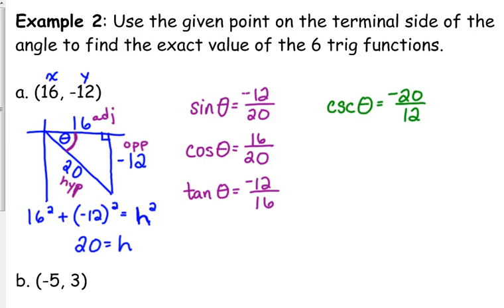But mathematically, we always leave the negative on the top. Secant, flip it over, 20 over 16. Cotangent, flip it over, again, leave the negative in the numerator.